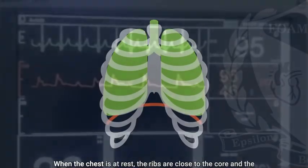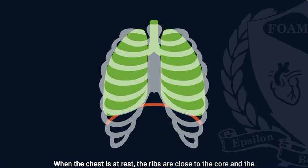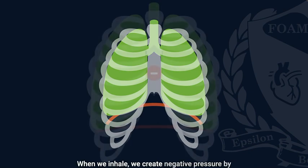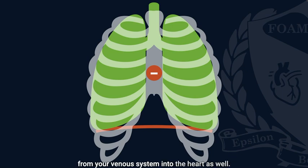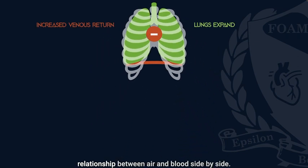Here's the mechanism. When the chest is at rest, the ribs are close to the core and the diaphragm is in its resting position, kind of like a parachute. When we inhale, we create negative pressure by dropping our diaphragm and expanding our ribs out. That draws air in from outside, and it draws blood from your venous system into the heart as well.